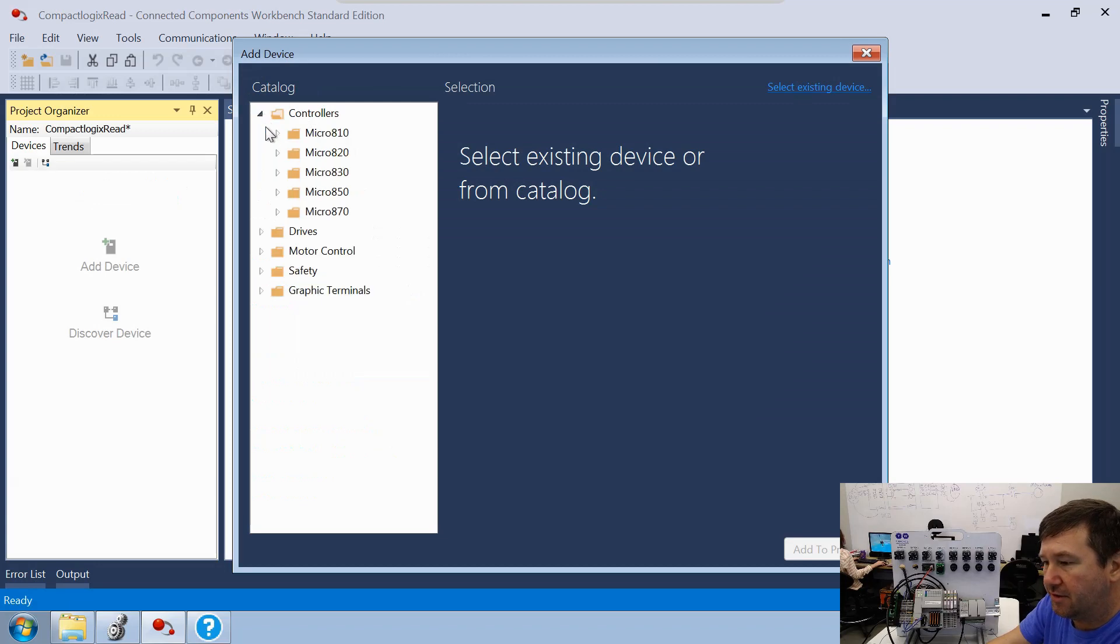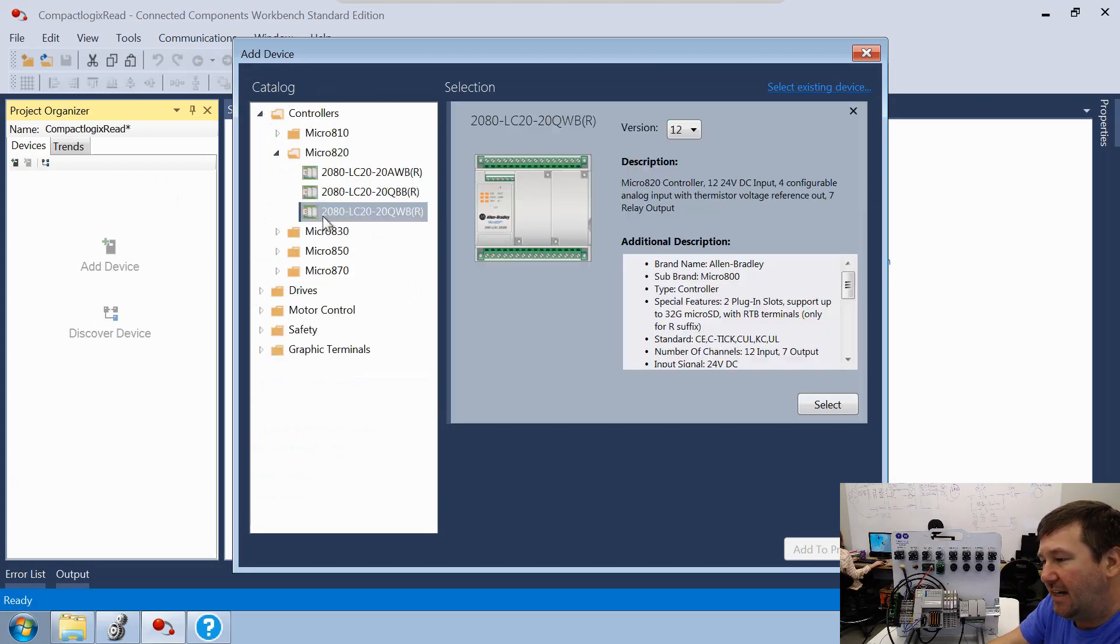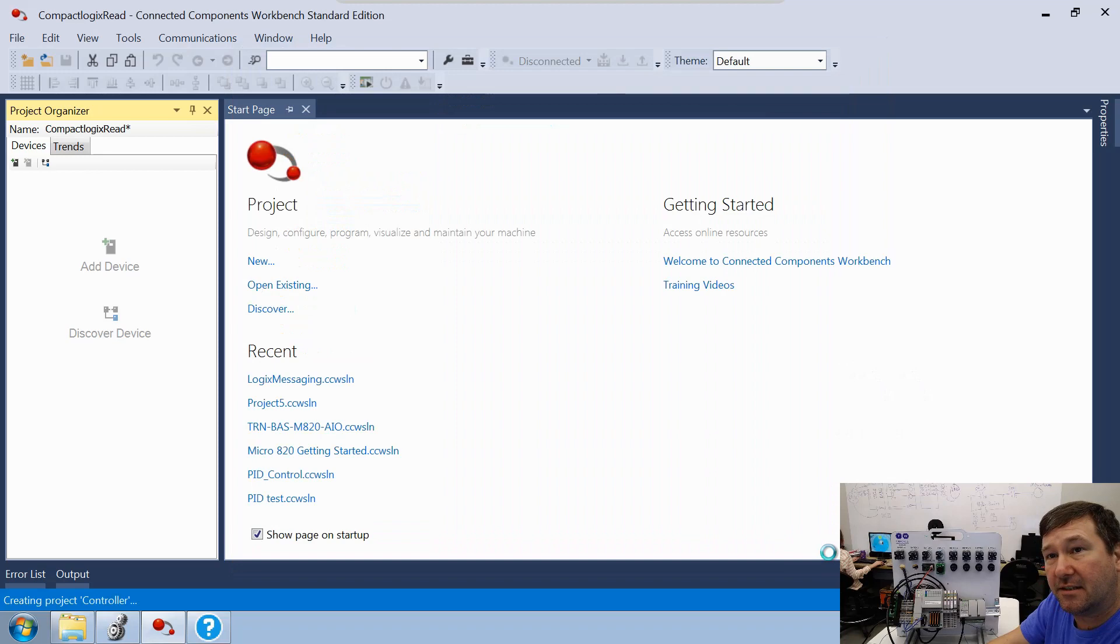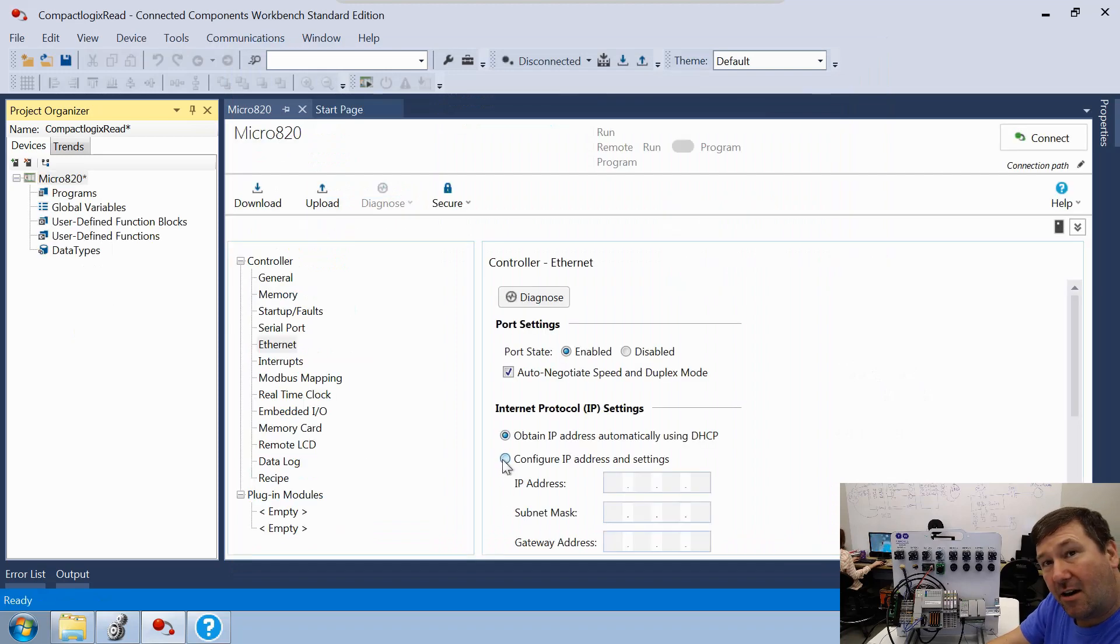We'll just call this Compact Logix Read. Go to Controllers, Micro 820. We're going to be using a 2080-LC20-20QWB. So we'll select it and add to project. And let's go ahead and set our IP address.